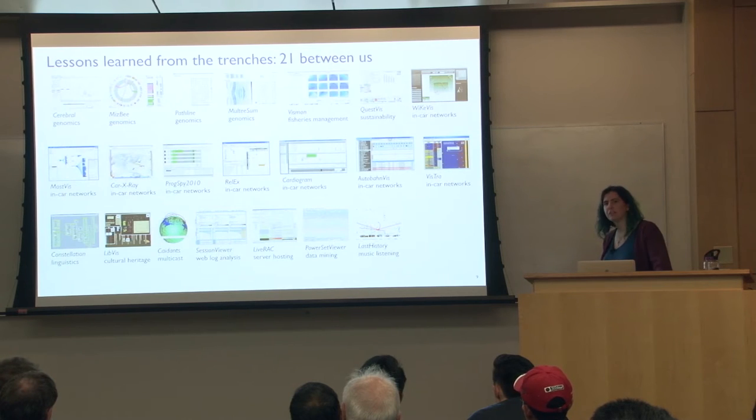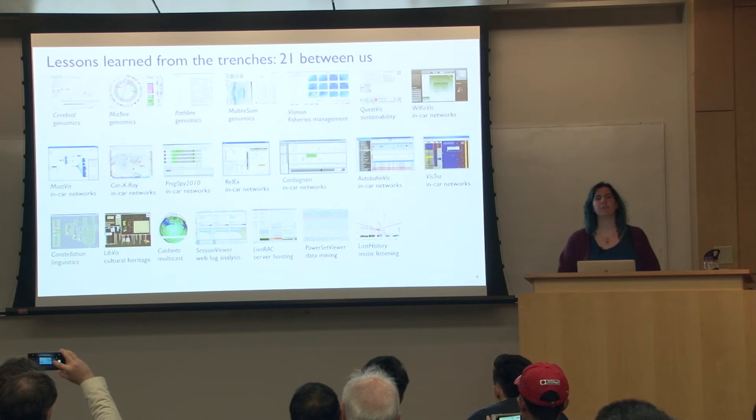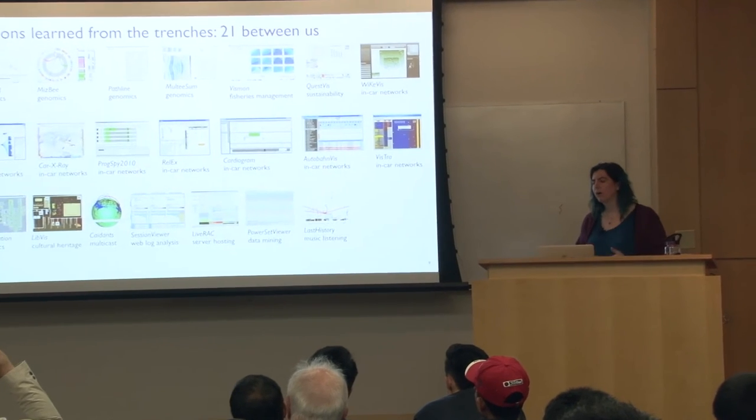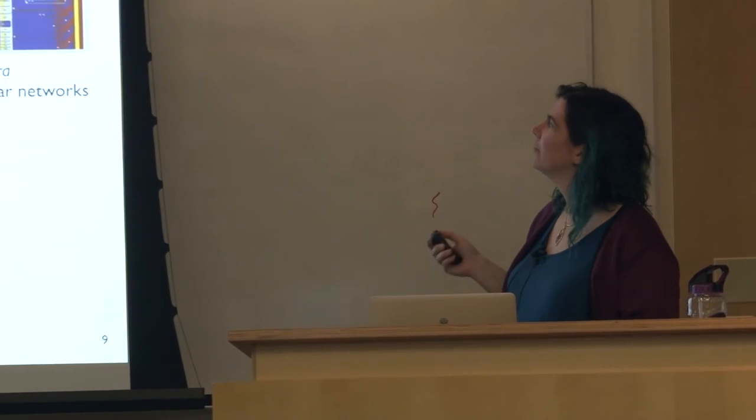We decided to write this paper because between the three of us we had done over 20 of these design studies over about a decade. Part of what we wanted people to think about is that some systems in the same domain have wildly different visual encodings, while some visual encodings look quite similar even across different domains. We really want to split out questions of abstraction and visual encoding from the domains in which they came from.